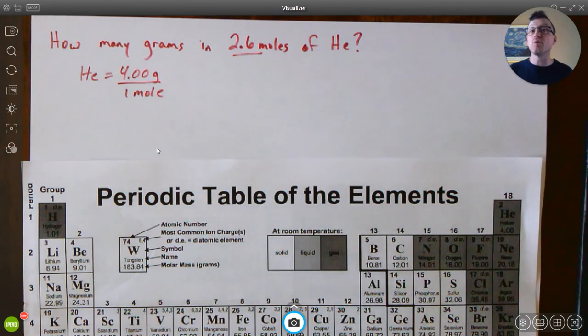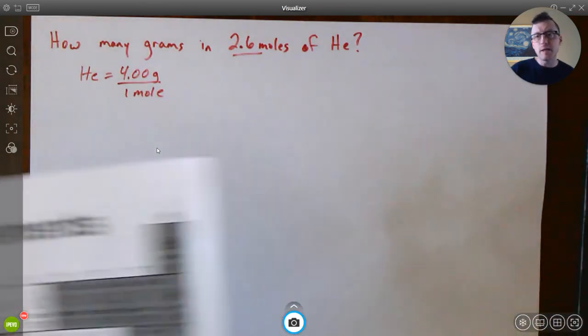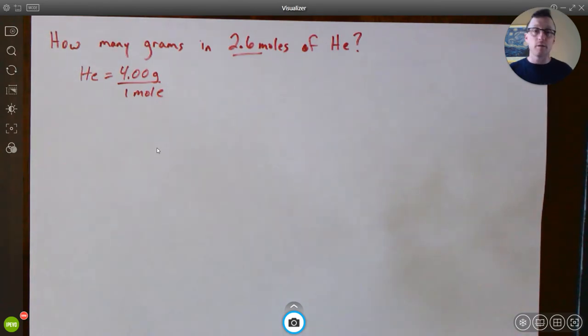Okay, well we actually have 2.6. I can use that ratio to help me figure out then how many grams 2.6 moles of it would be. Kind of like saying if you know how many dollars one banana or one dozen bananas cost and you have 2.6 dozen bananas, you can figure out how much that cost.